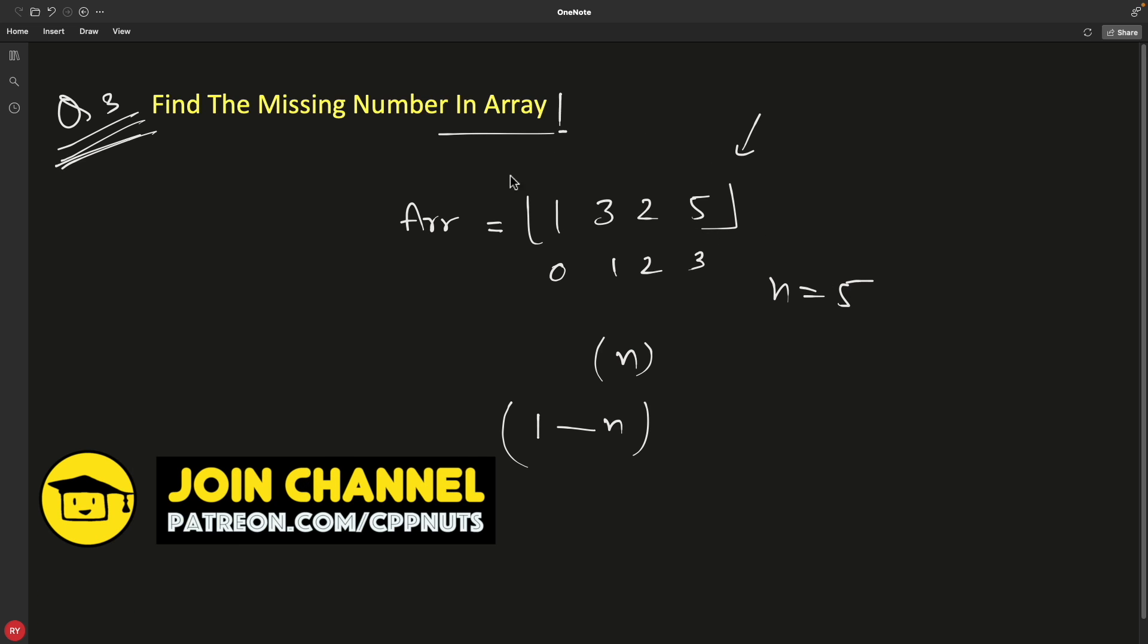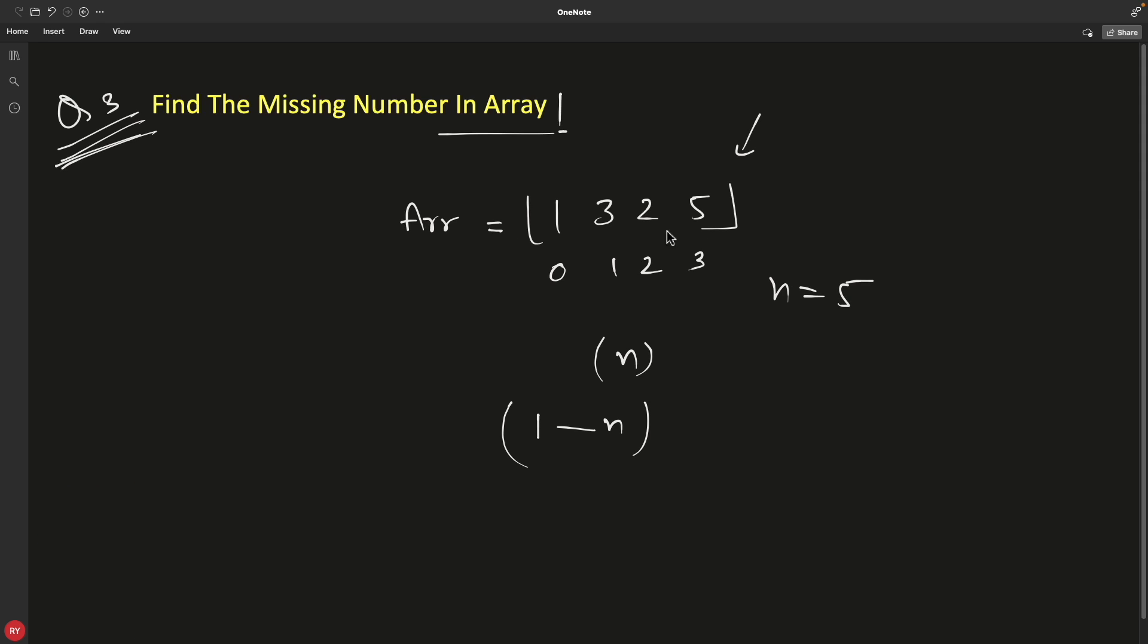That's why n is 5. What is missing? 4 is missing. We can see 1, 2, 3, 4 is not there and 5 is there. So total number of elements should be 5, but one element is missing and you have to find that element.